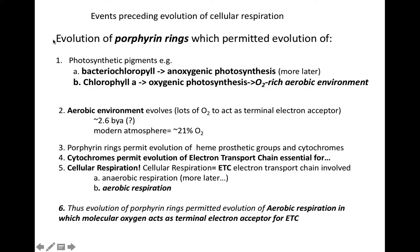A major evolutionary event was the evolution of porphyrin rings, which really made aerobic respiration possible. Porphyrin rings are crucial parts of photosynthetic pigments such as bacteriochlorophyll, which permits anoxygenic photosynthesis. They are also crucial parts of chlorophyll A, which permitted the evolution of oxygenic photosynthesis. The evolution of oxygenic photosynthesis permitted the evolution of an O2-rich environment, converting Earth's atmosphere from anaerobic to aerobic.